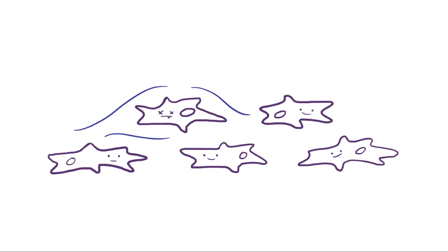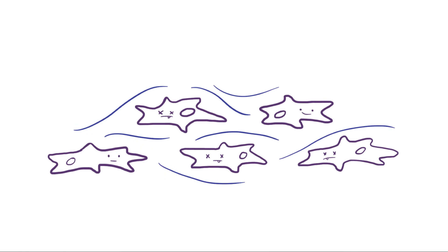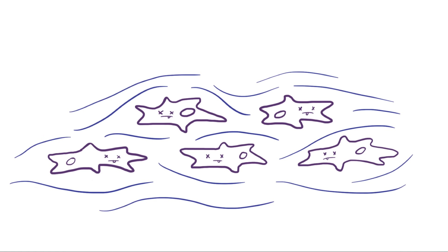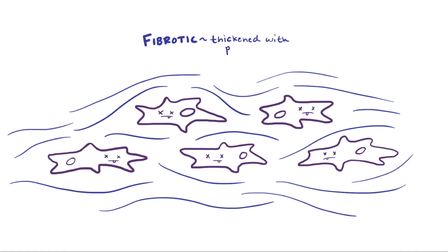When cells are injured or damaged and die off, usually that dead tissue that was previously full of living cells becomes fibrotic, meaning it becomes thickened with heaps and heaps of protein and forms scar tissue.